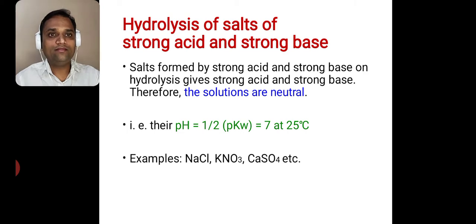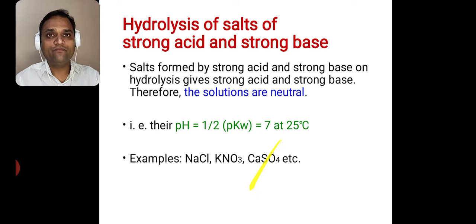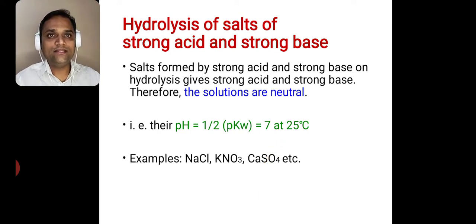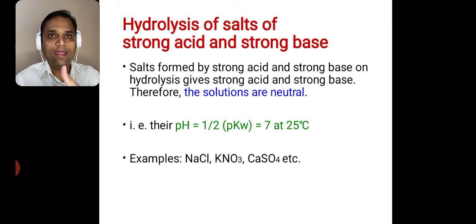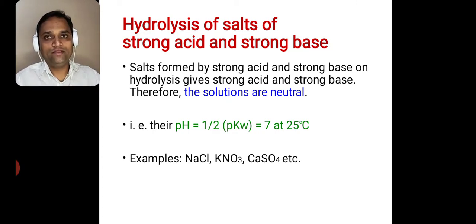Their pH is equal to 1/2 pKw, which is equal to 7 at 25°C. Examples are sodium chloride, potassium nitrate, calcium sulphate — all these are the salts of strong acid and strong base.